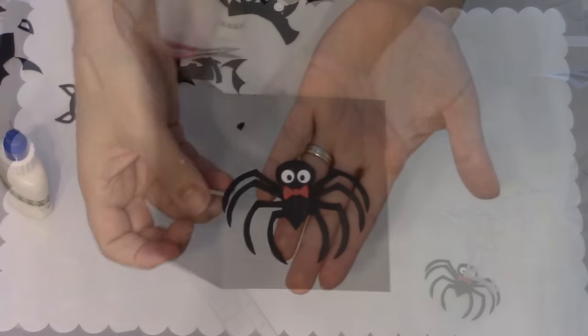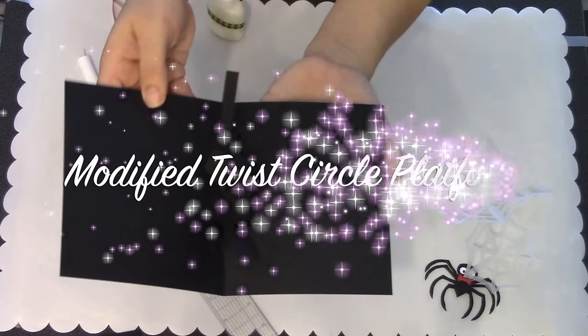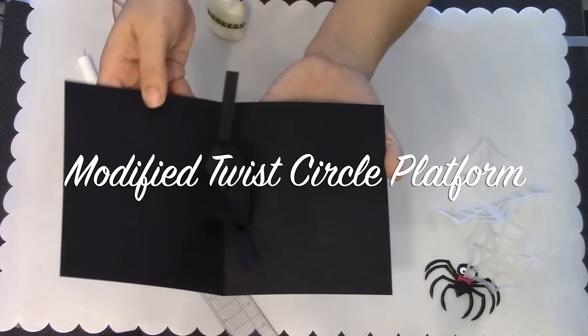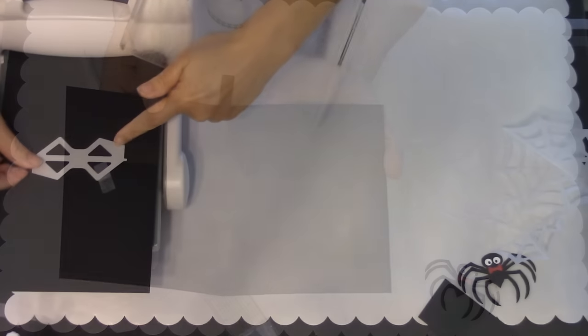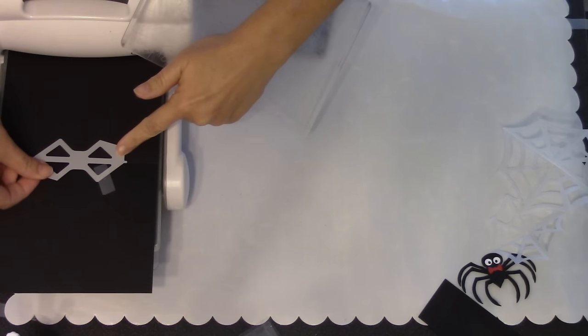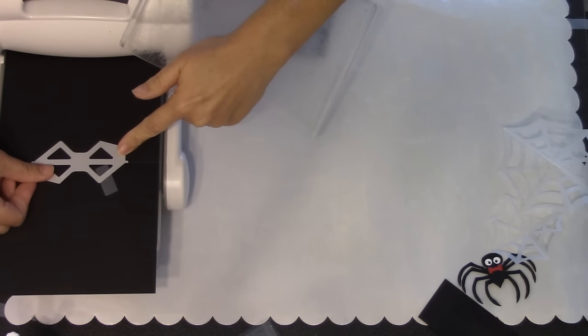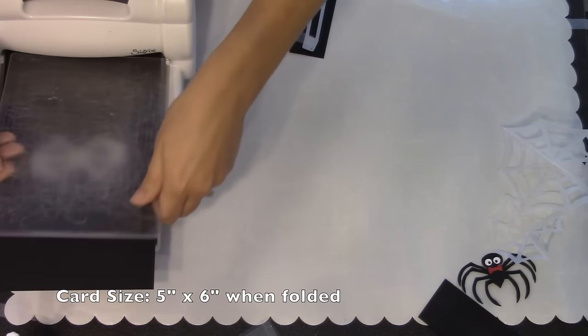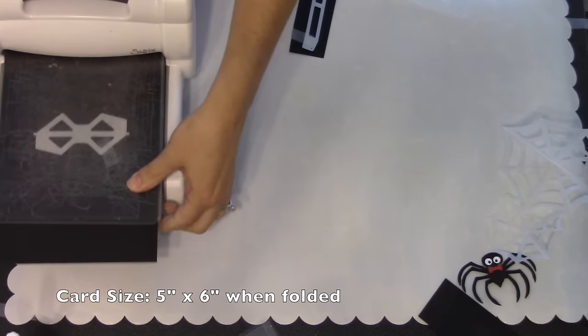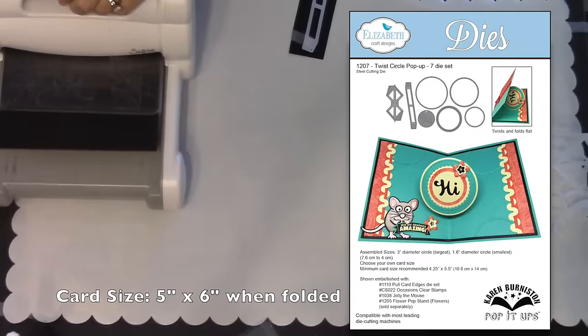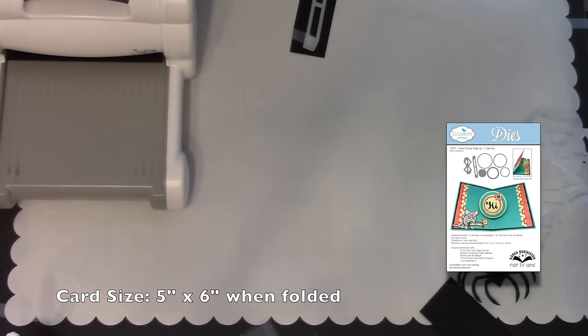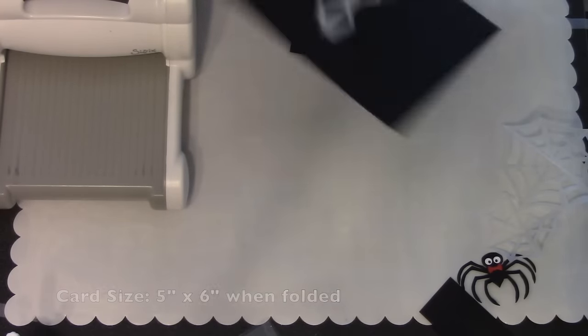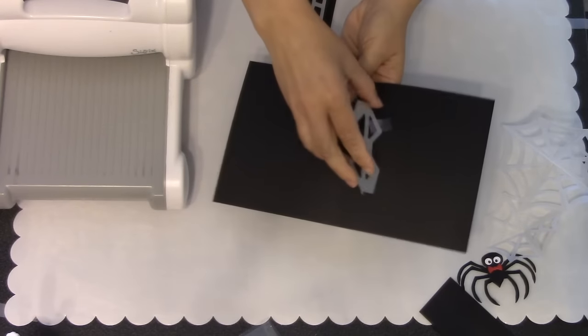Now I've got my spider, I've got my webs, and it's time to modify the twist circle platform. With Pop It Ups dies you always choose your card size. I'm using some black cardstock. My card size is 5 inches by 6 inch when folded. It's unfolded now so that I can line up the pop-up die from the twist circle set right over the fold of that card, which is easy to do because the die has those little alignment nubs.